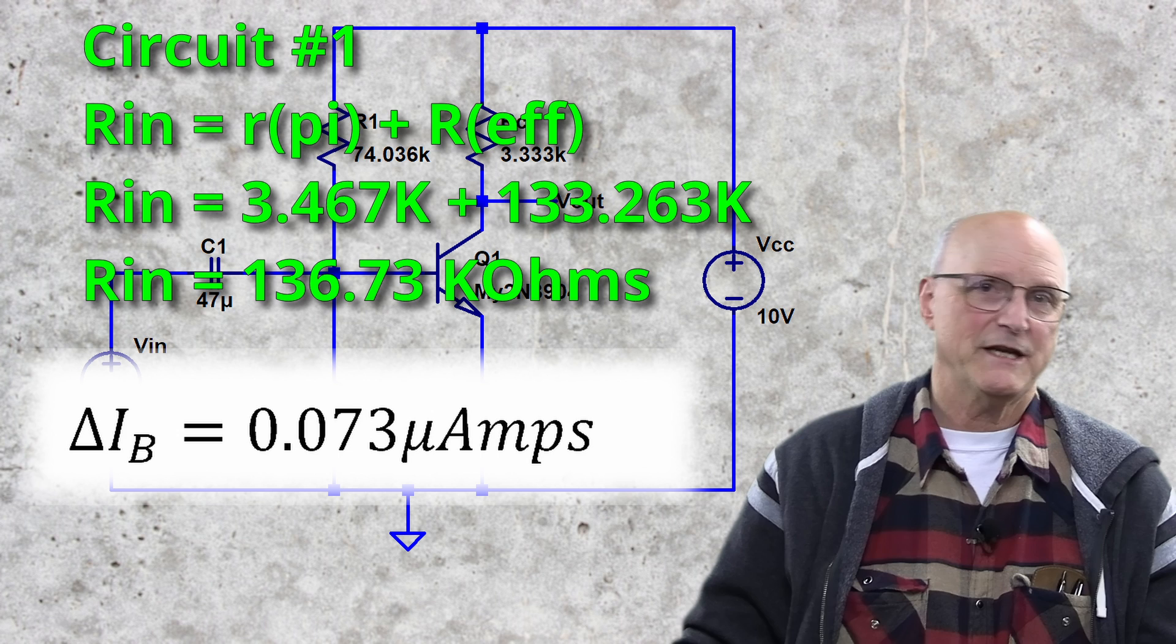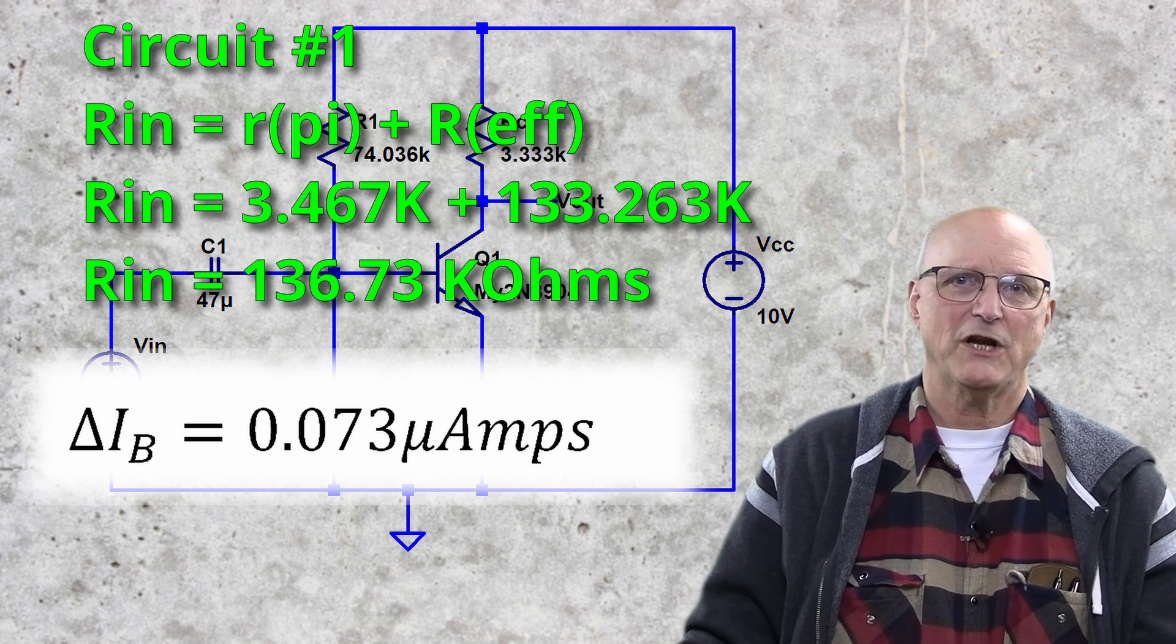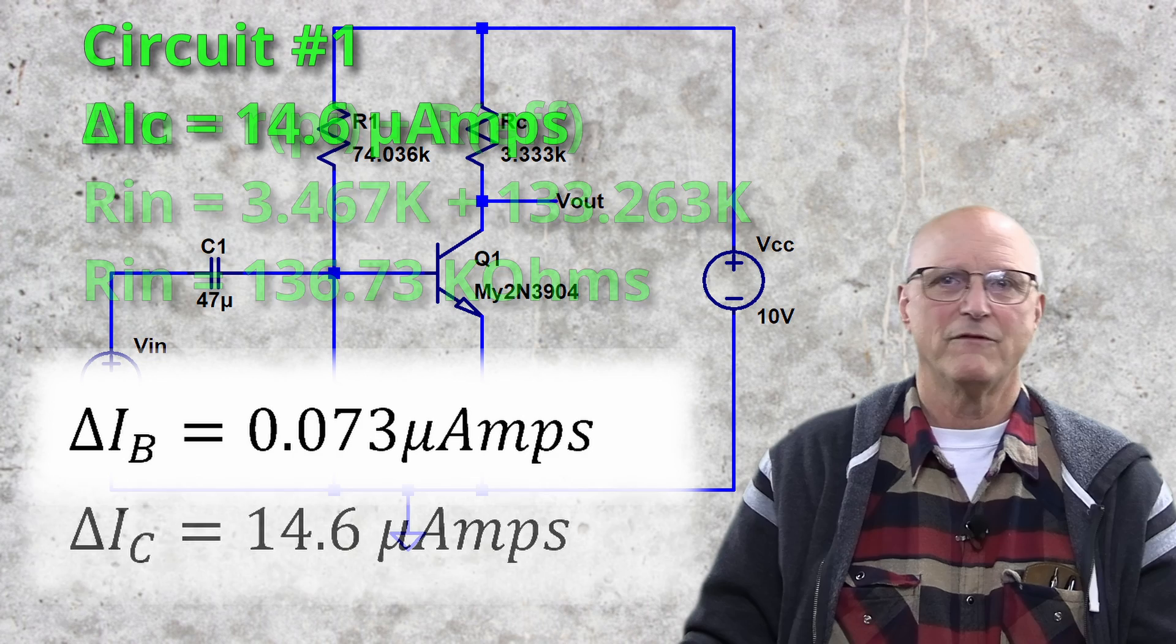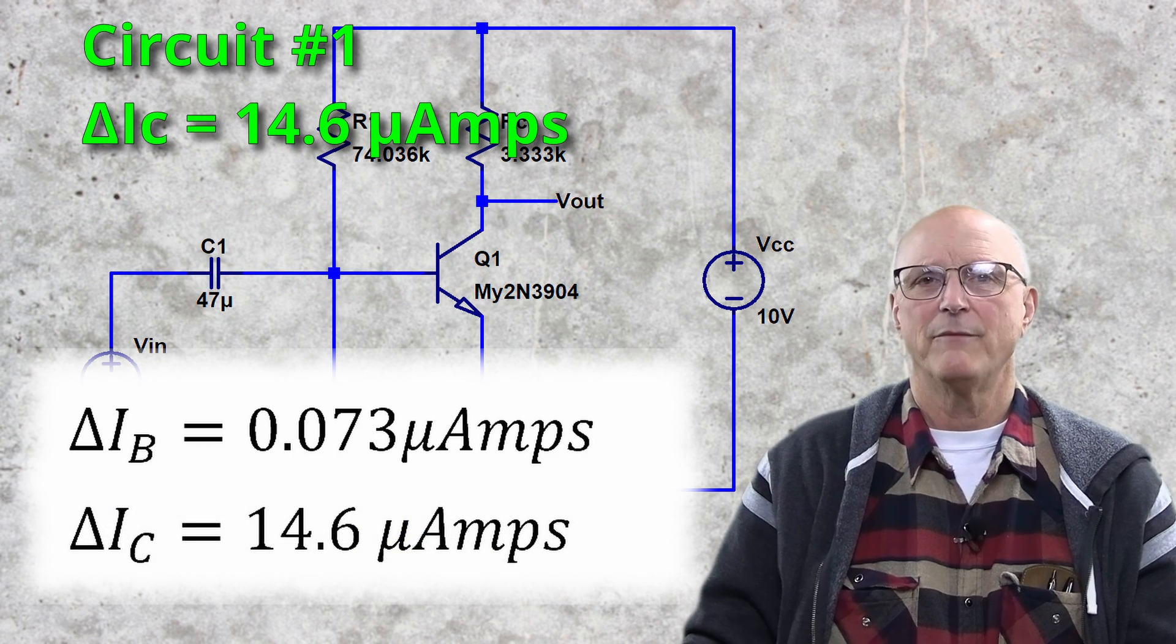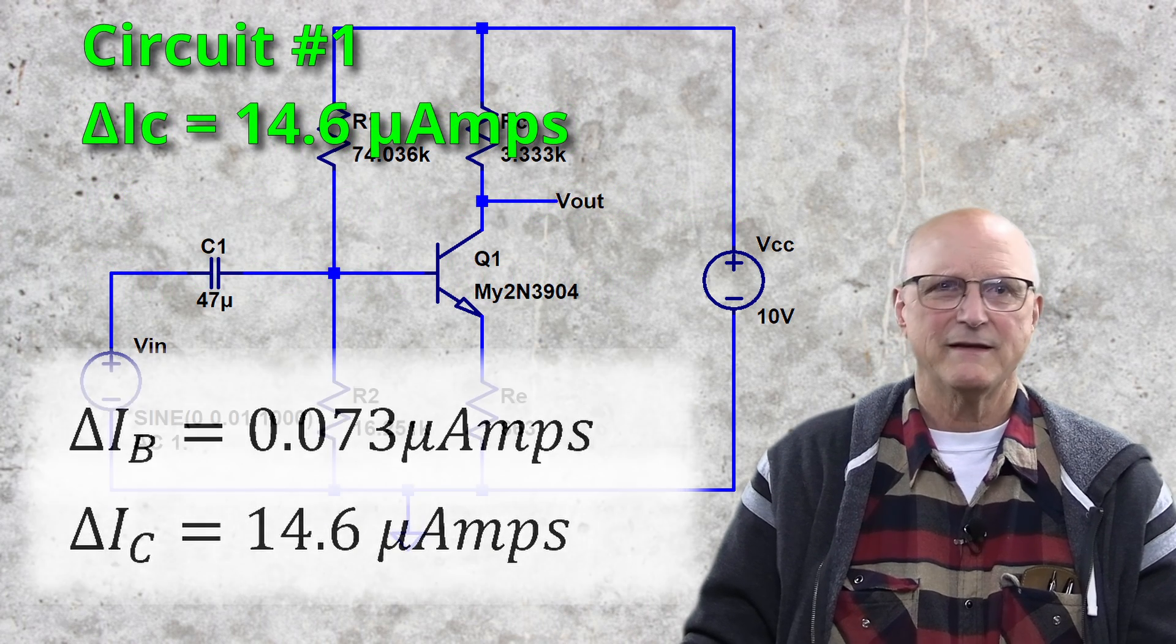For the first circuit, using Ohm's law, we would have 0.01 volts divided by 136.73 kilohms, giving us a change in base current of 0.073 microamps. With a DC current gain of 200, we would see a change in the collector current of 14.6 microamps.